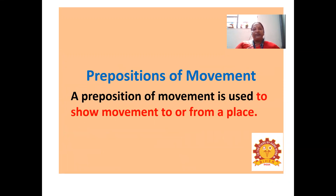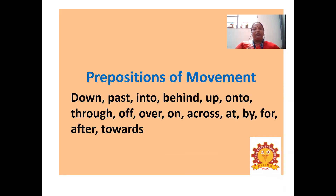The third type, prepositions of movement, is used to show movement to or from a place — whether an action is from a place or towards a place. The list includes: down, past, into, behind, up, onto, through, off, over, on, across, at, by, for, after, and towards.